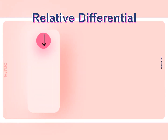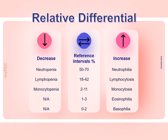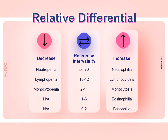The WBC differential count helps assess patient condition when we compare the relative differential to reference intervals. For example, if more than 70 neutrophils are counted, the patient has relative neutrophilia — an increase in neutrophils — which may be caused by a bacterial or fungal infection, helping the doctor in diagnosis. Another example: if there are more than 42 lymphocytes counted, the patient may have relative lymphocytosis, which may be caused by a viral infection.